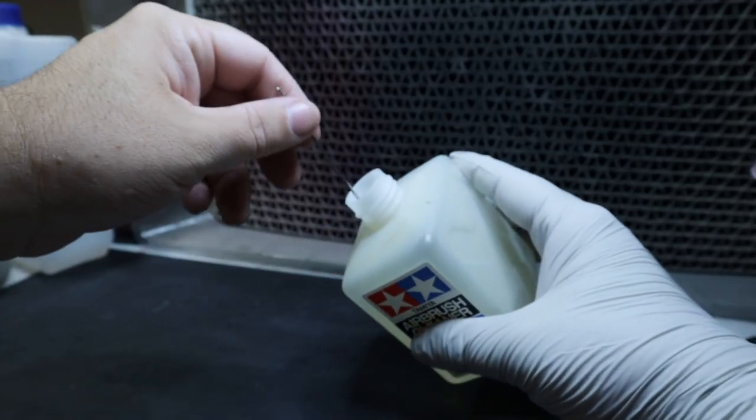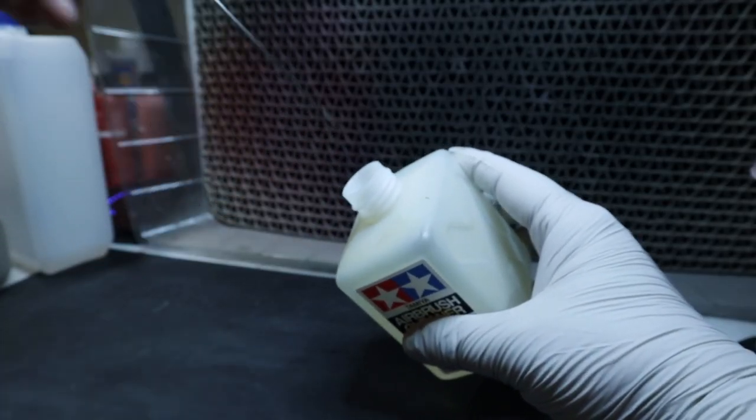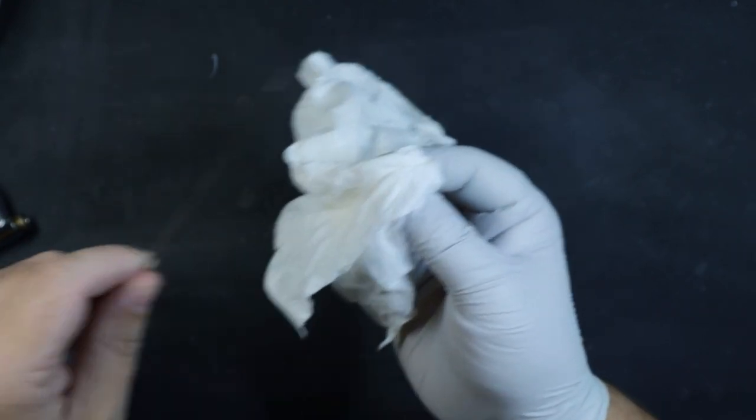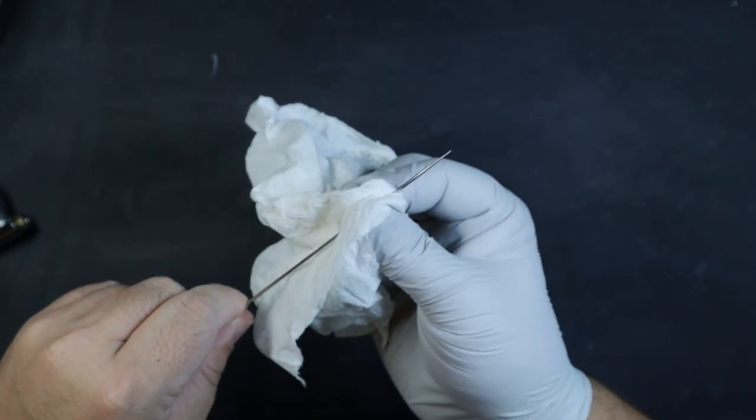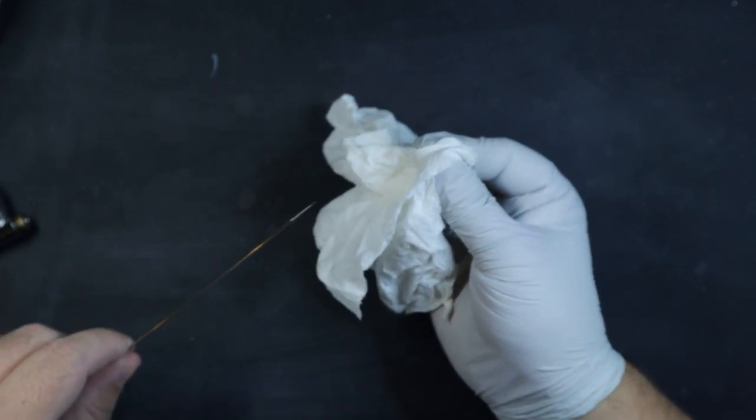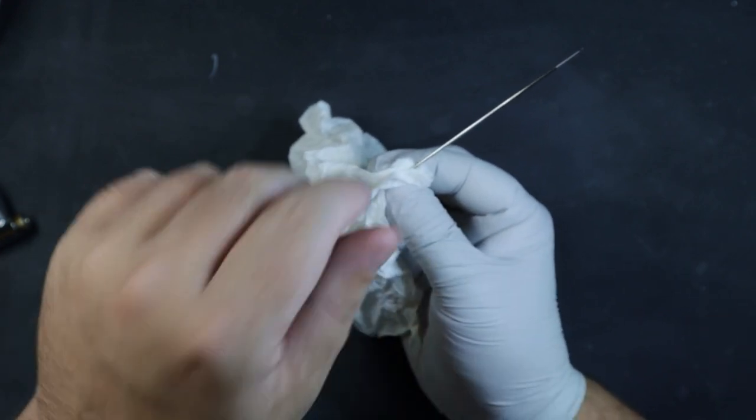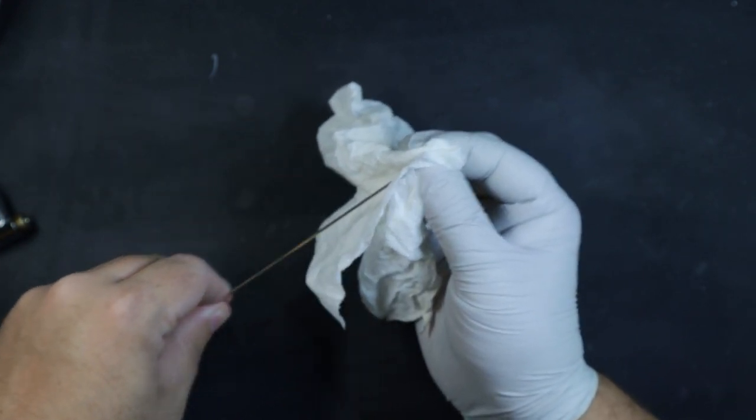The first thing you're going to do is dip your needle into the airbrush cleaner bottle. Next we're going to remove the airbrush cleaner by pulling the needle down through a paper towel. We want to be sure that we don't push upwards because we might damage the needle and prick ourselves in the process. Make sure you pull the needle down and away from your hands.